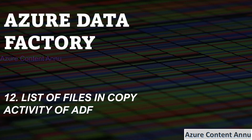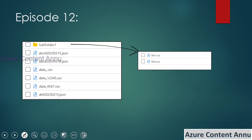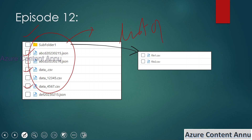Hi friends, welcome to Azure Content. This is part 12 in the Azure Data Factory playlist. In this video we will learn about the List of Files option in the copy activity of an ADF pipeline. In scenarios where we need to copy only some specific files out of a folder or container to another location, we can make use of this List of Files option in copy activity.